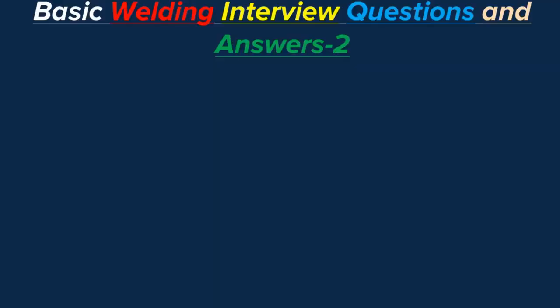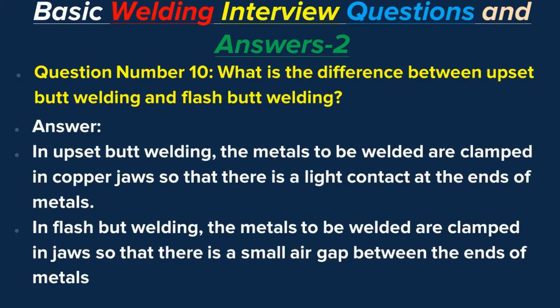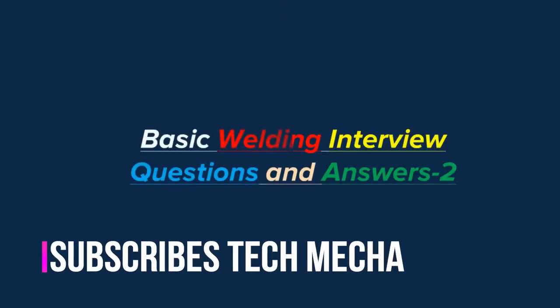Question number ten: What is the difference between upset butt welding and flash butt welding? Answer: In upset butt welding, the metals to be welded are clamped in copper jaws so that there is a light contact at the ends of the metals.